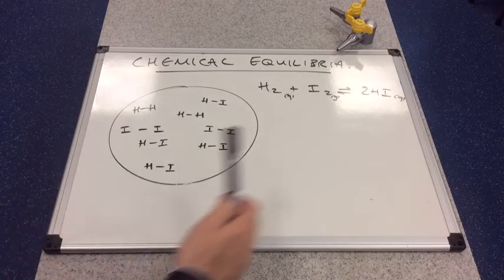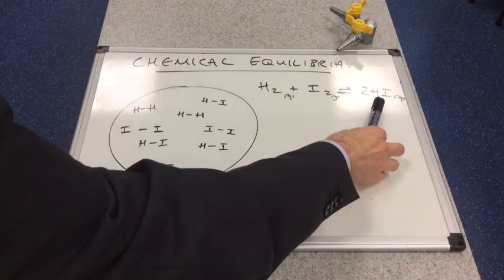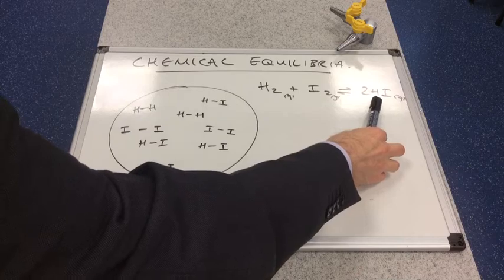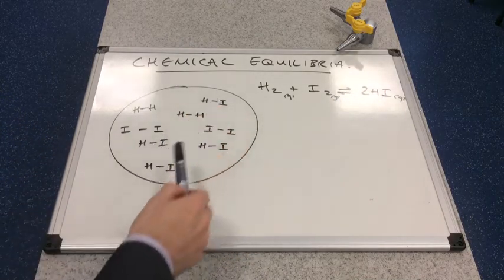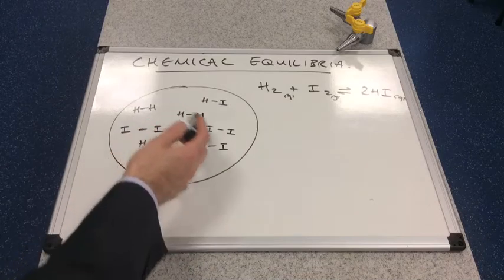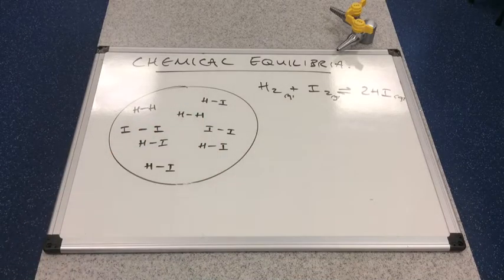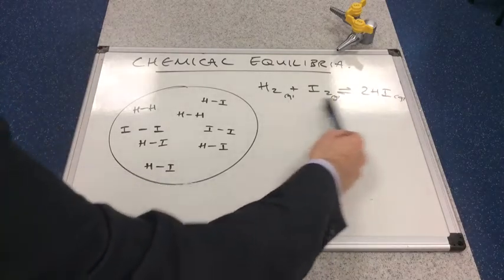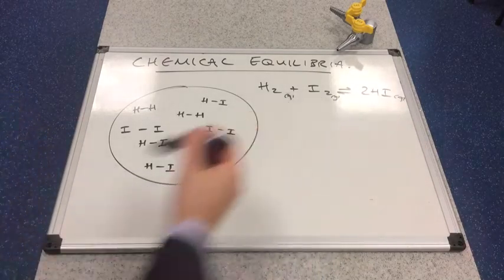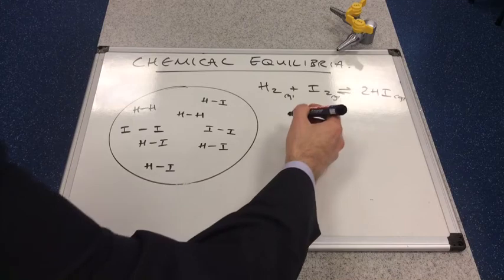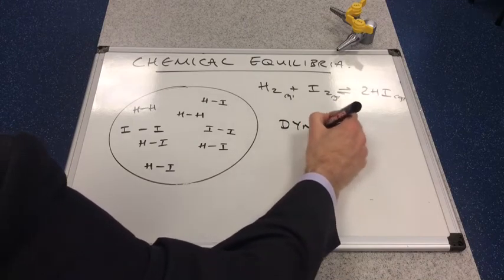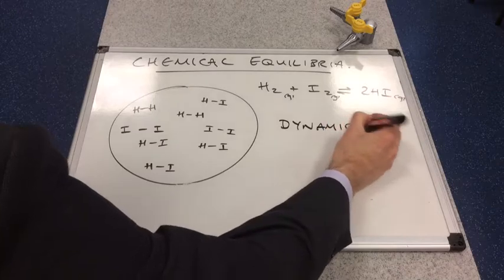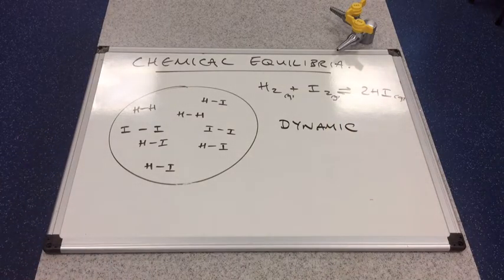But remember that the HI molecules can also split up. So you could have HIs splitting up into the H2 and the I2. Therefore this process never stops. It's a continuous process. The word that we use in chemistry for that is dynamic.